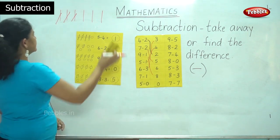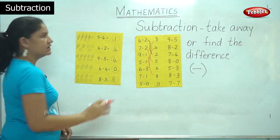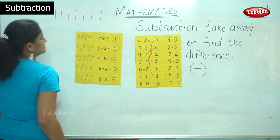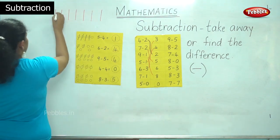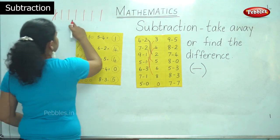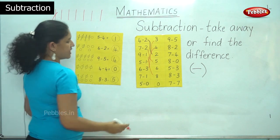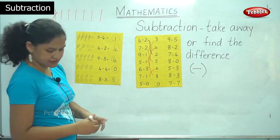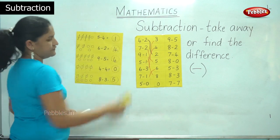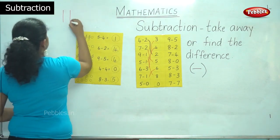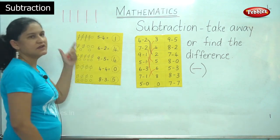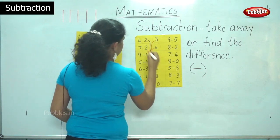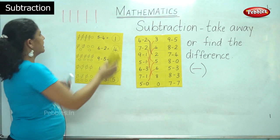The next sum I have 7 take away 1. So I have 7 sticks: 1, 2, 3, 4, 5, 6, 7. So 7 take away 1 — I take away 1 and I get the answer 1, 2, 3, 4, 5, 6. So my answer is 6. So I match it up with 6. Next I get 5 take away 0. So I am having 5 sticks: 1, 2, 3, 4, 5. So 5 take away 0 — I get the answer 5. So I match it up with number 5. I am not taking away anything from these 5 sticks.